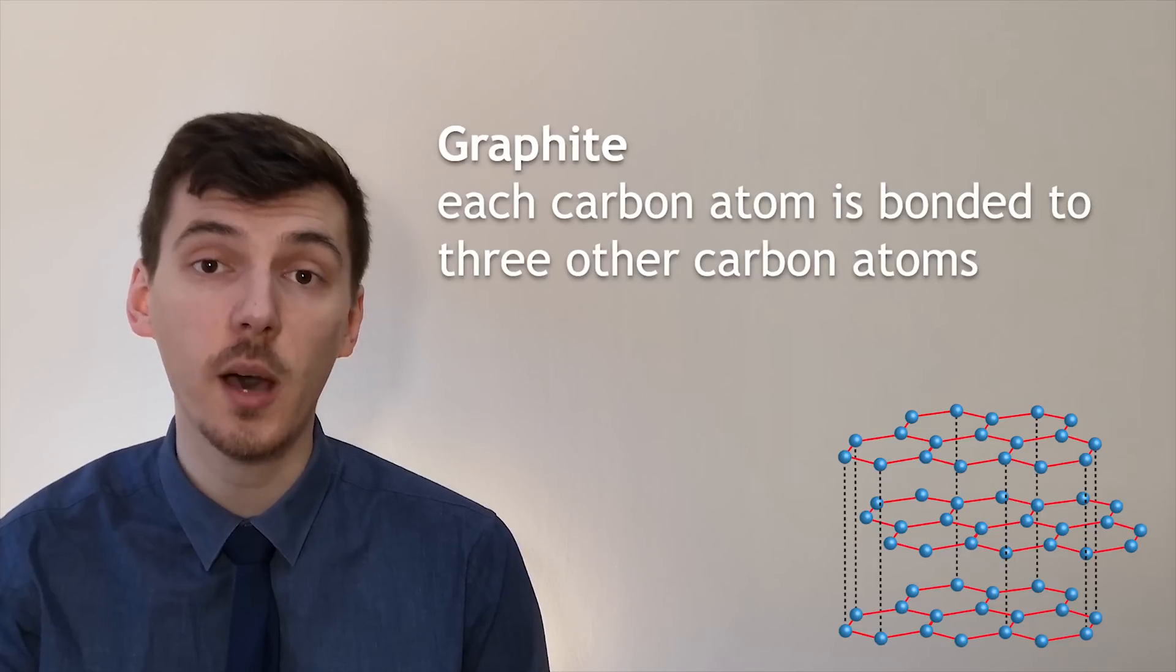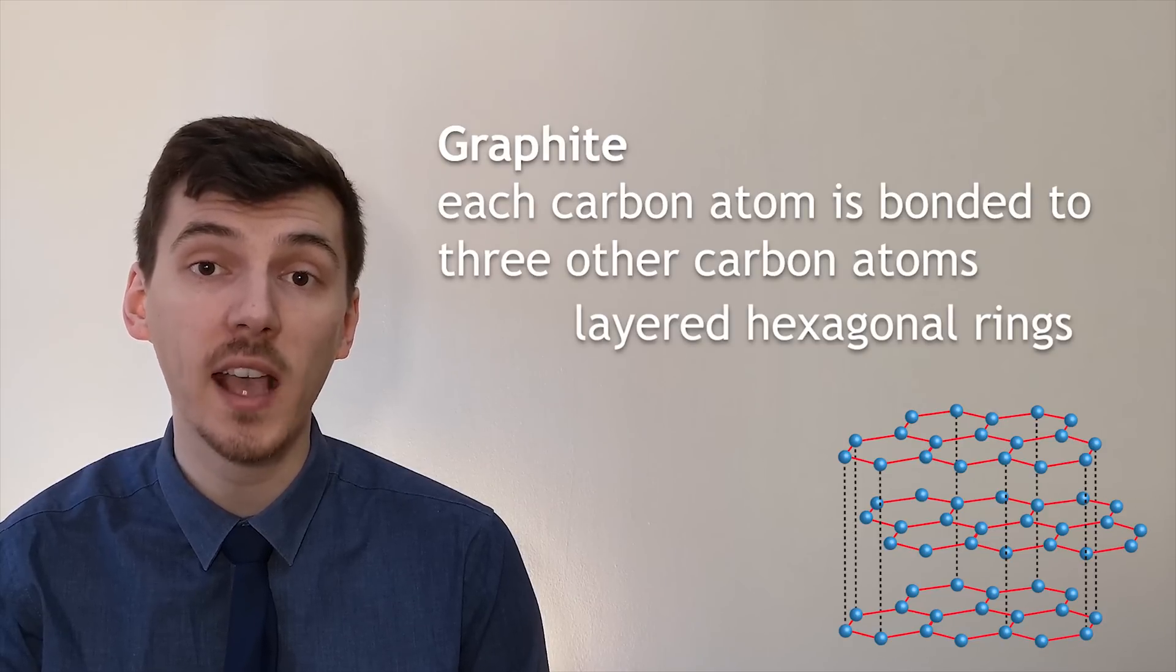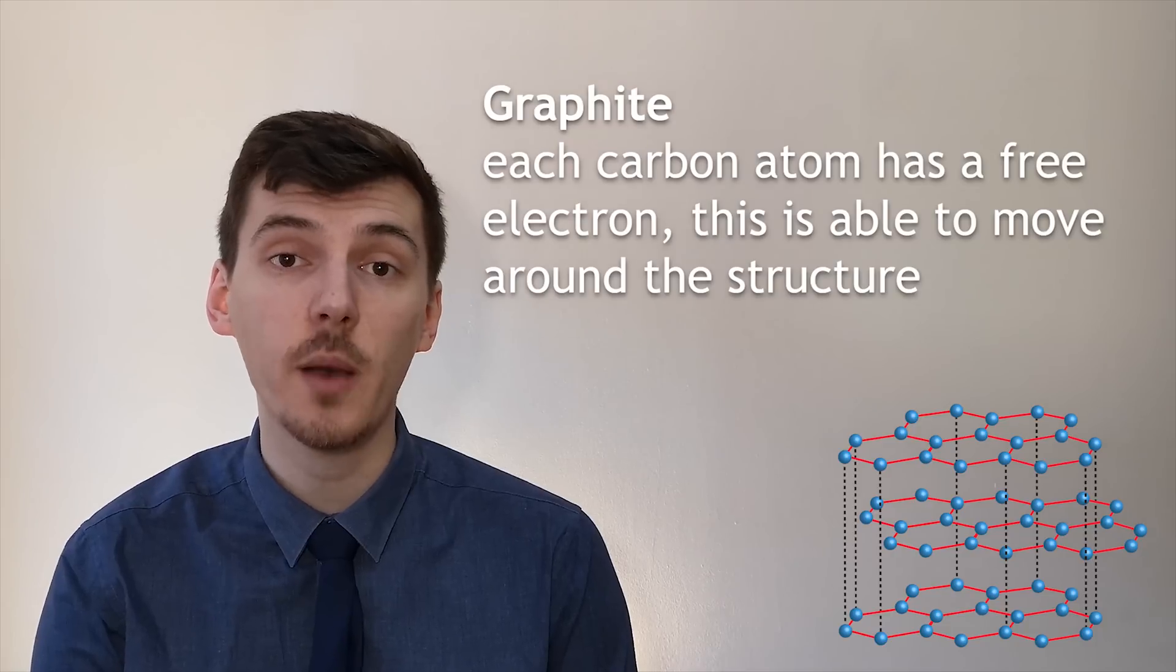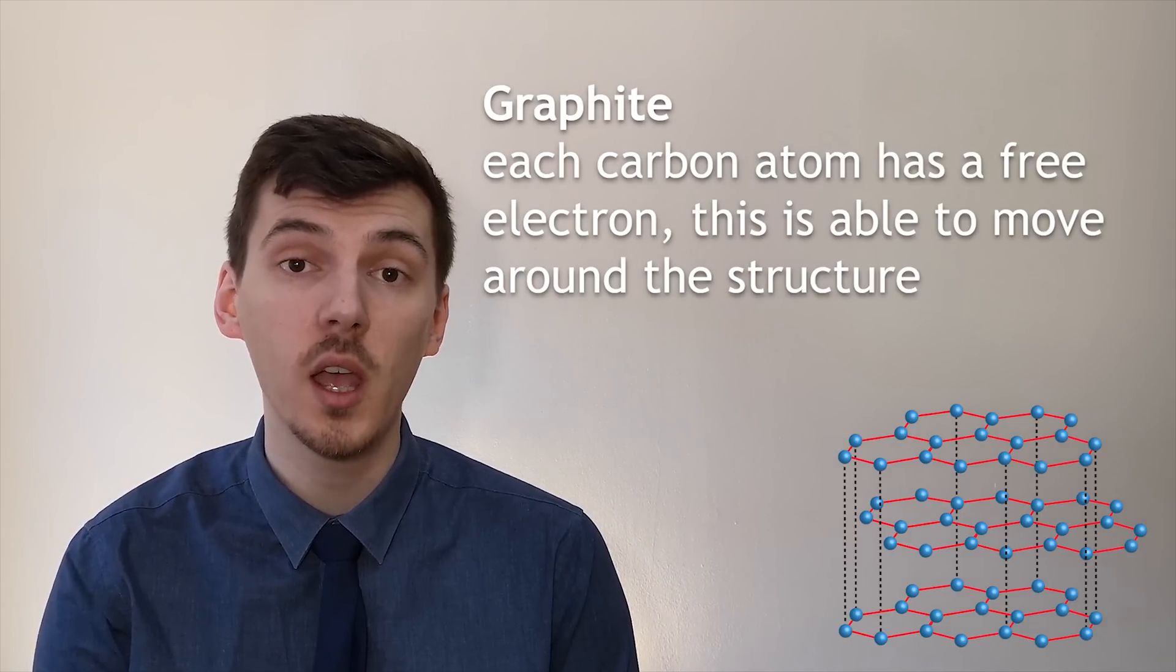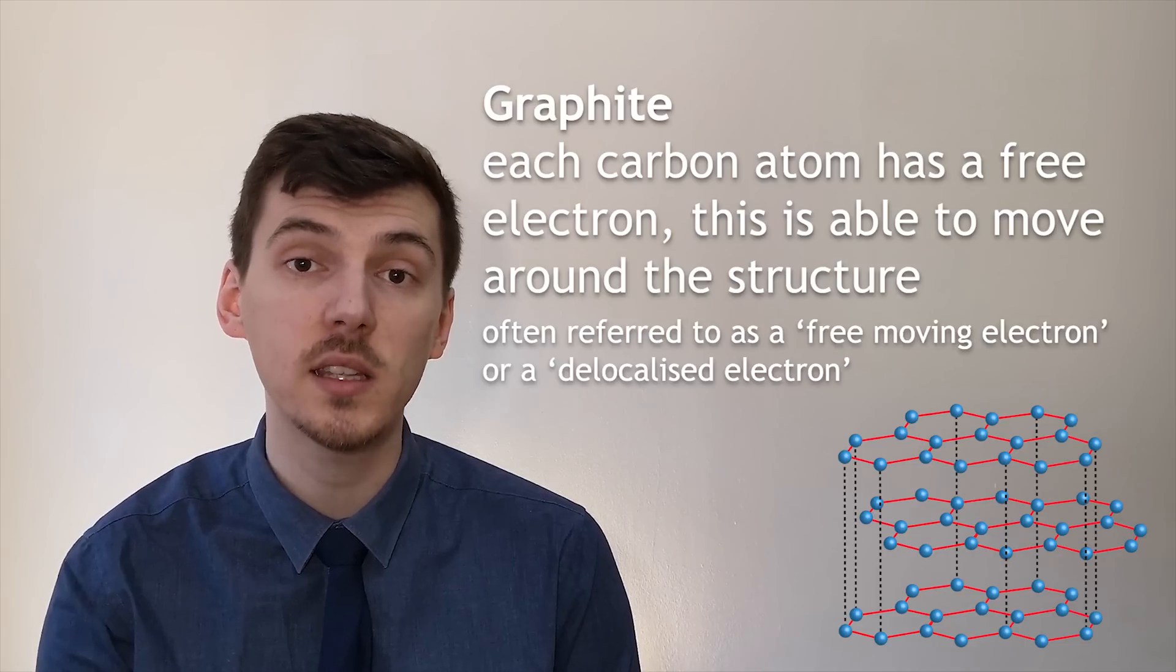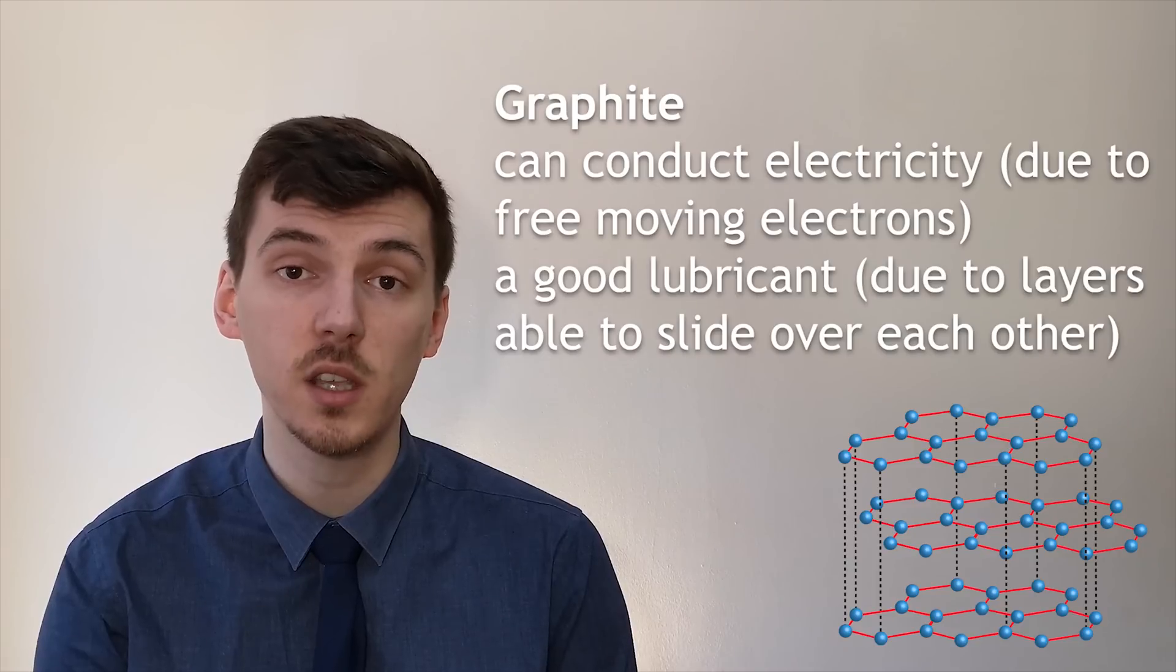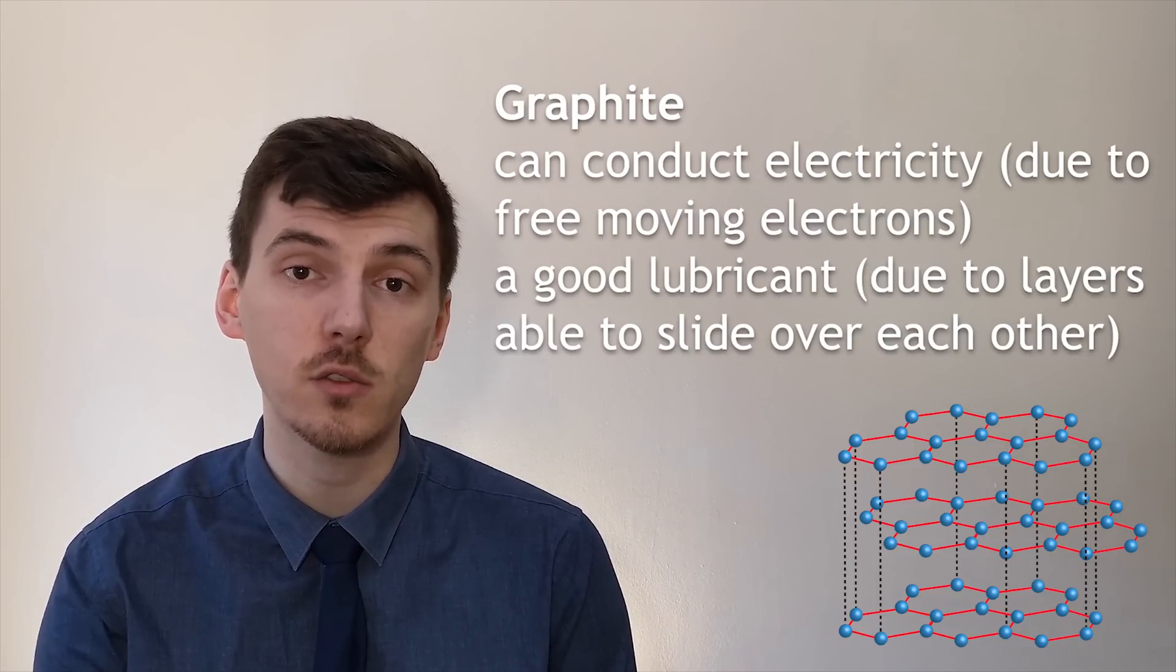In graphite, each carbon atom is bonded to only three other carbon atoms. This gives rise to a layered structure of graphite made up of hexagonal rings. Because each carbon atom only forms three bonds, each carbon atom therefore has one electron free. This electron is donated to the structure and is called a free-moving electron. Because of this, graphite is able to conduct electricity.